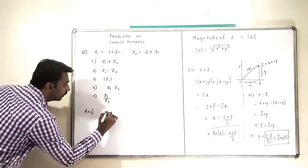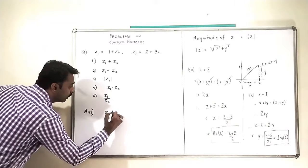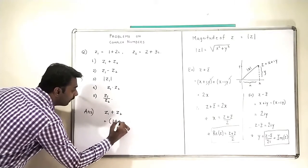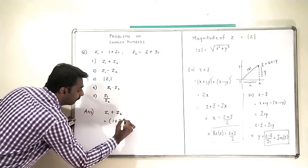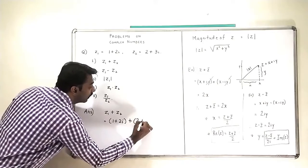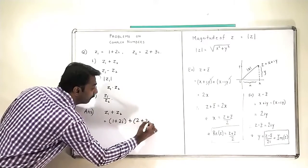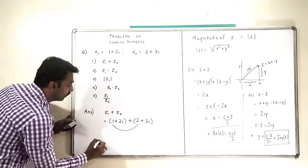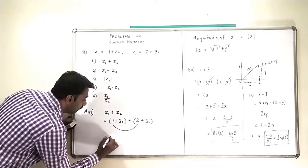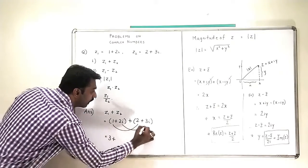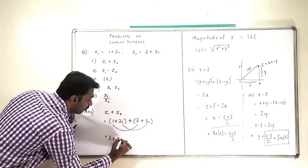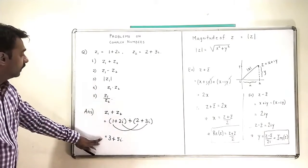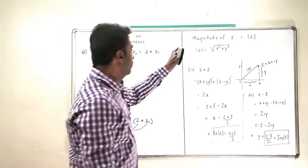So what is Z1 plus Z2? That is equal to 1 plus 2i plus 2 plus 3i. Real part and real part: 1 plus 2 will become 3, and 2i plus 3i will become 5i.